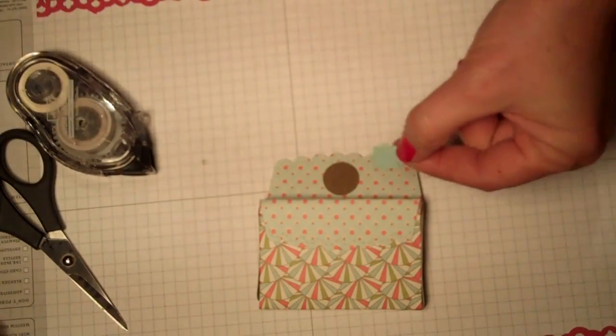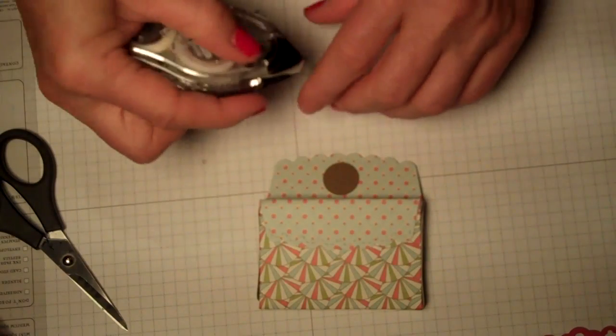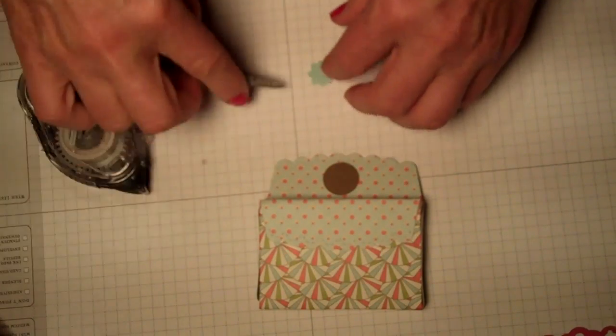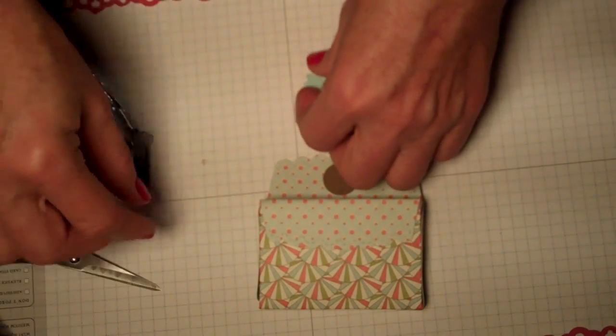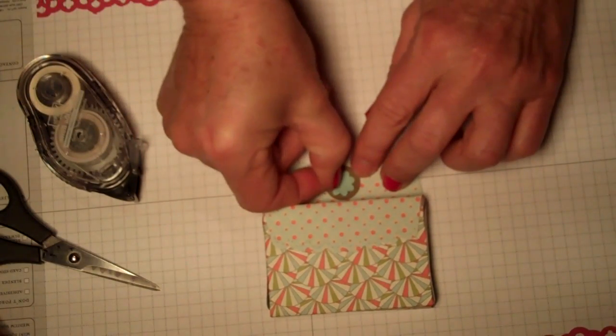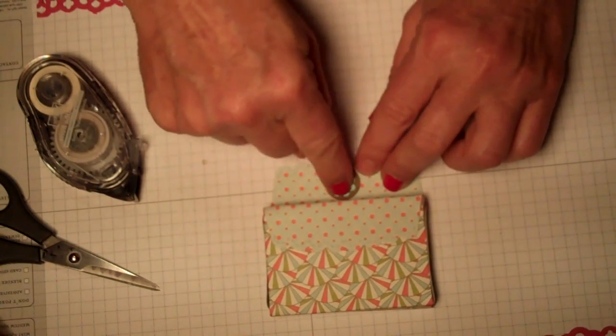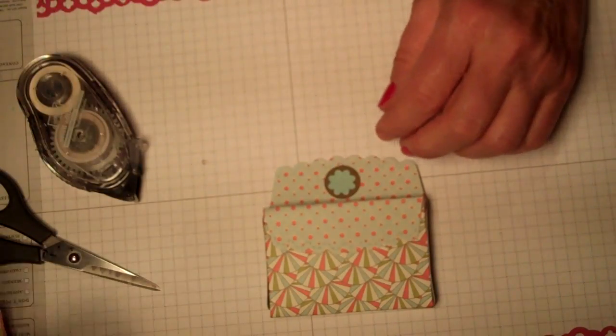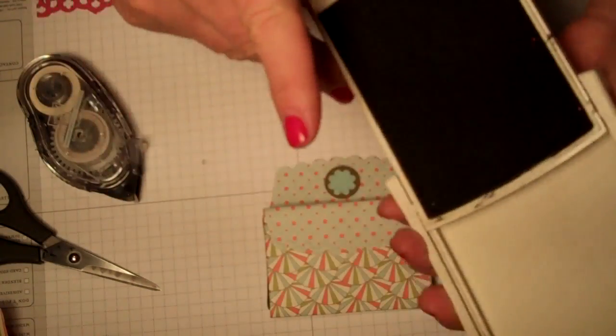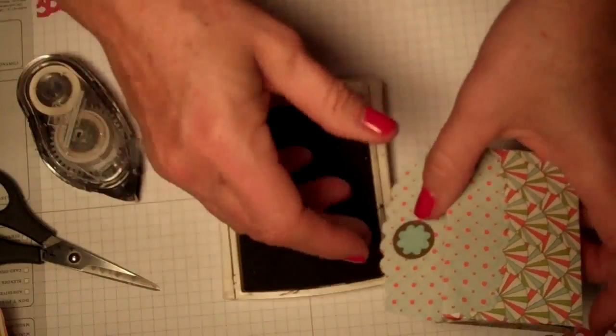This sweet little scallop circle. I'm gonna put that right on top. Maybe a stinker. Oh, it's so cute. All right, now the next thing I'm gonna do is I'm gonna take soft suede. See this paper is a little strange in that it looks like it's been sponged by somebody.